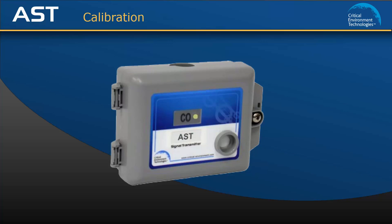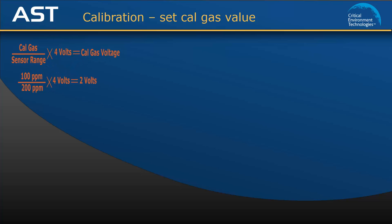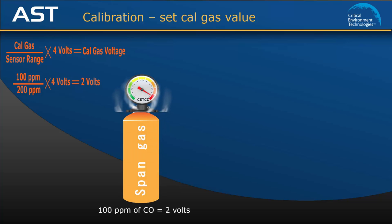The first step in calibration is to set the calgas value. To calculate the value that needs to be set, you must use the formula shown on the screen. The values we know are the factory set calgas default for CO, which is 100 ppm, and the CO sensor range, which is 0 to 200 ppm. Using the formula, we are able to calculate that the calgas value for CO is 2 volts.